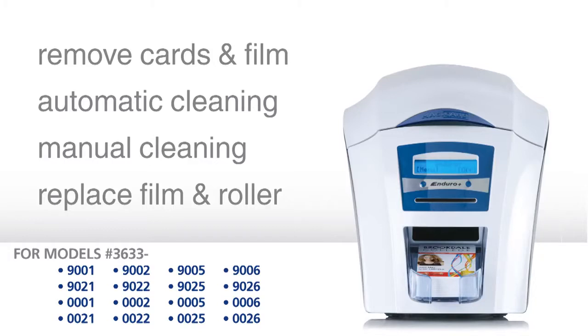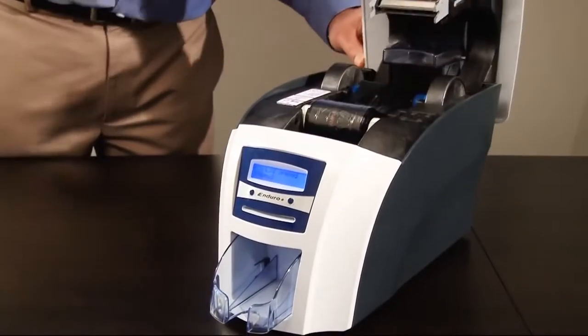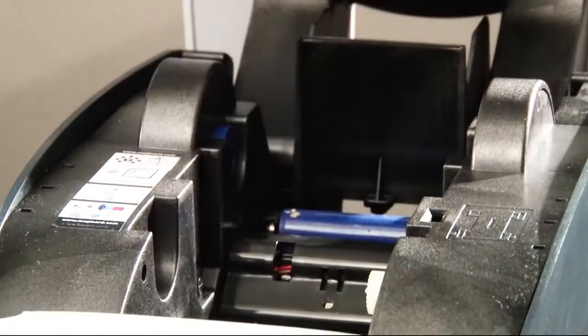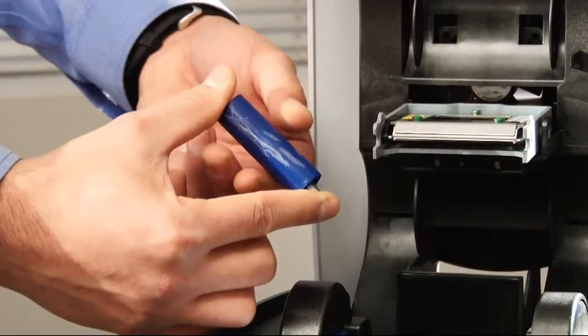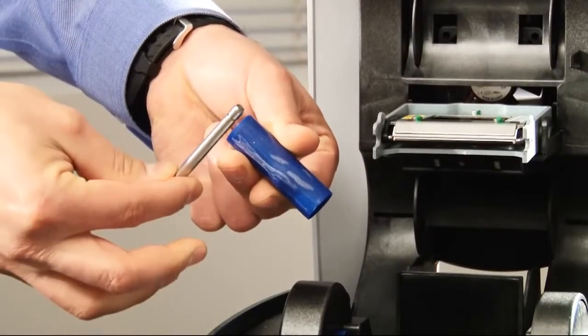There are four easy steps to cleaning the Enduro Plus. First, remove the cards and dye film from the printer. Remove the card hopper from the back of the printer and open the lid to remove the dye film ribbon and the blue sticky roller underneath it. Remove the metal bar from this blue roller and keep it in a safe place.